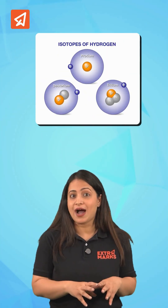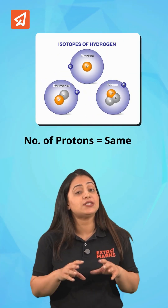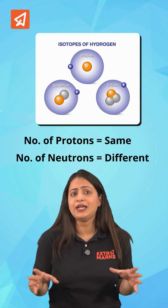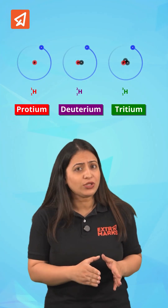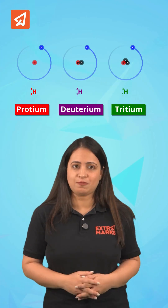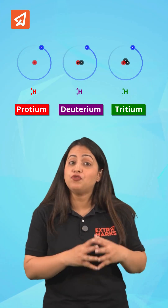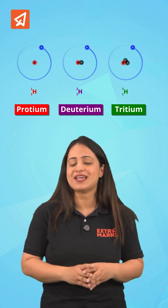Isotopes are atoms of the same element with the same number of protons but different number of neutrons — like H1, H2, and H3, named as protium, deuterium, and tritium respectively, where each one of them has one proton and the number of neutrons are different.